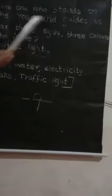Fifth one. The one who stands on the road and guides us. Has three eyes and three colors. Who is he? Answer: traffic light.